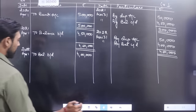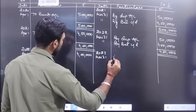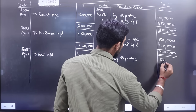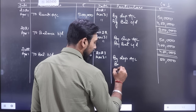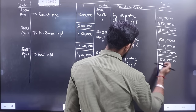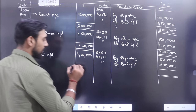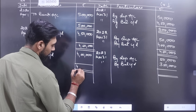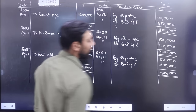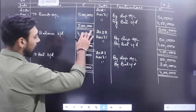2023 March 31 - phir se depreciation lagega - by dep account. 50,000 ka debt aa gaya phir se. By balance carried down: 4,00,000 minus 50,000 = 3,50,000 balance aa jaega. Teesre saal ka kaam khatam. Yeh bhi 4,00,000 aur yeh bhi 4,00,000. Toh 3 saal ka kaam kar chuke hain basically.